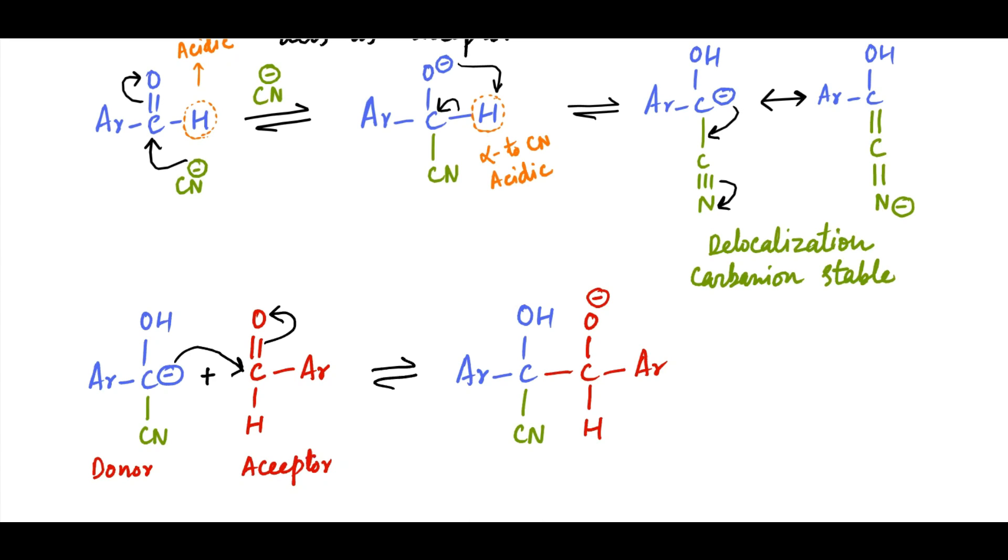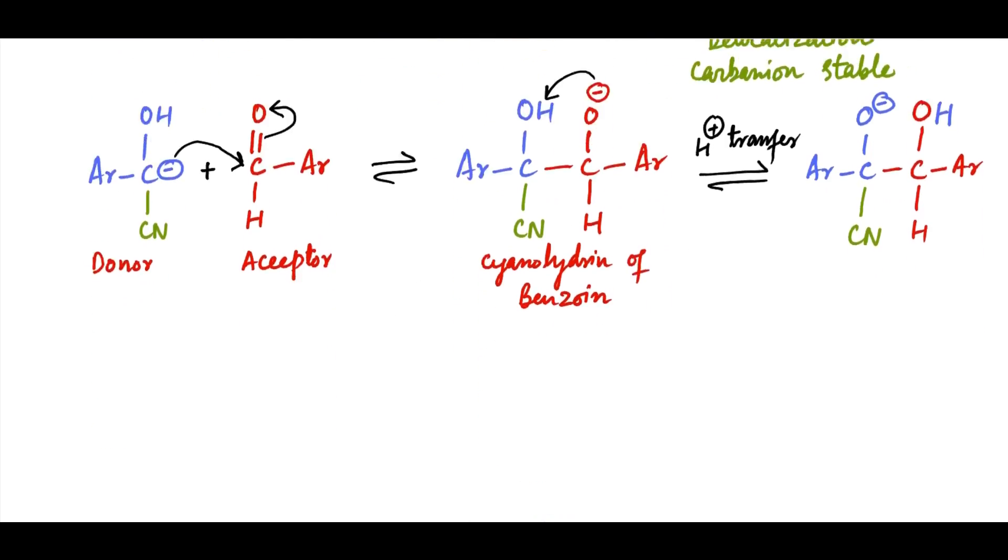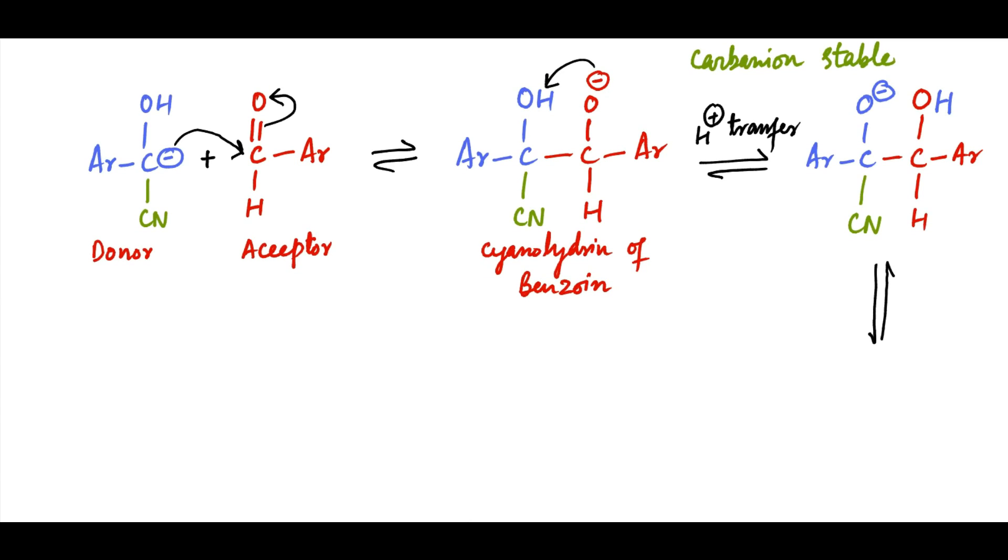The intermediate form is called cyanohydrin of benzoin. This cyanohydrin undergoes rapid transfer of hydroxyl proton to alkoxide oxygen, so that new alkoxide is generated on the carbon which is connected to cyanide. Cyanide ion being a good leaving group is rapidly lost from cyanohydrin of benzoin to give benzoin. Thus cyanide catalyst is regenerated.